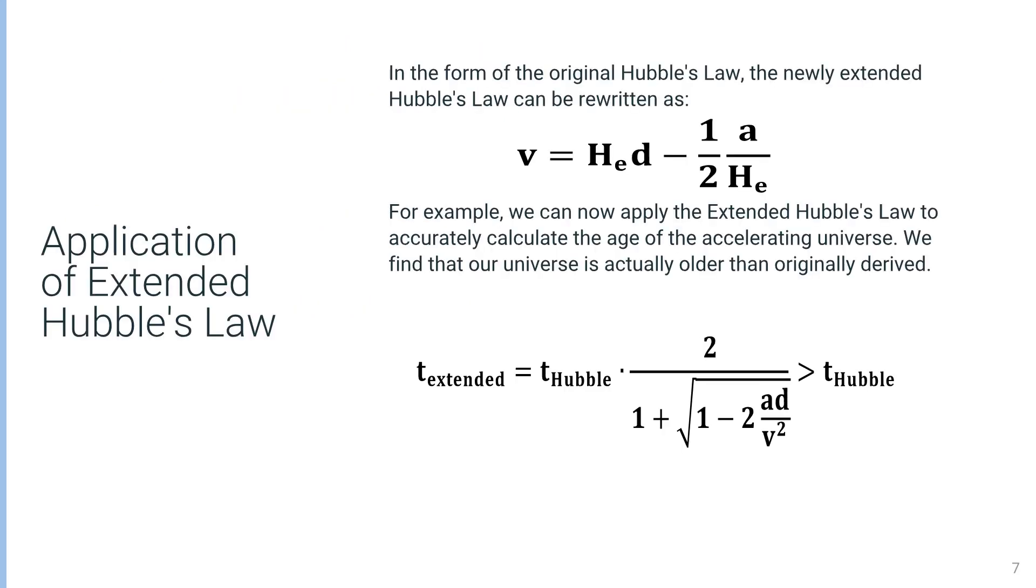The extended Hubble's Law can also be rewritten in the form of the original Hubble's Law. As an example, we can now apply this extended law to recalculate the age of the accelerating universe. It turns out that the universe is actually older than that based on the original Hubble's Law.